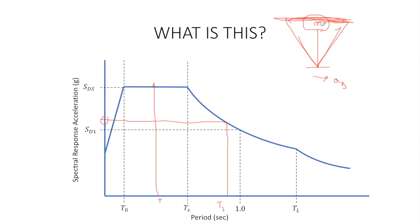What gives the response spectrum its shape? Essentially, a number of ground motions are gone through and the accelerations associated with those seismic events are applied to this system. The maximum response acceleration of the system — call it A sub T — is recorded for a given period. Then the period of the system is changed to another period, and another, until you end up with a list of maximum accelerations for various periods. That's how you come up with this envelope.